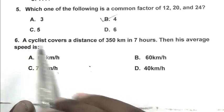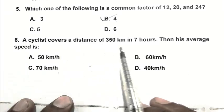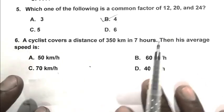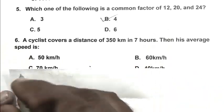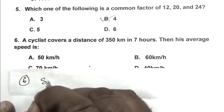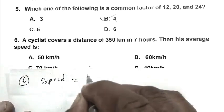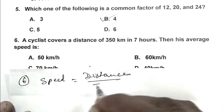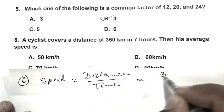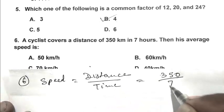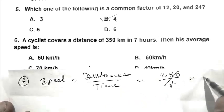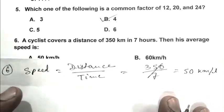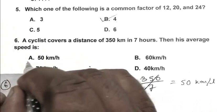Question number 6: A cyclist covers a distance of 350 km in 7 hours. Then his average speed is? Speed equals distance by time, that is distance 350 by 7, it is 50 km per hour. So A is the right answer.